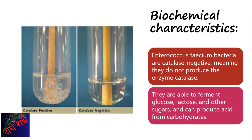Enterococcus faecium are bacteria that lack the enzyme catalase, making them catalase-negative. This means that they will not break down substances containing oxygen, such as hydrogen peroxide. Fermenting glucose and other sugars, as well as producing acid from carbohydrates, are abilities they do possess. These biochemical characteristics can provide useful insight into these microorganisms.